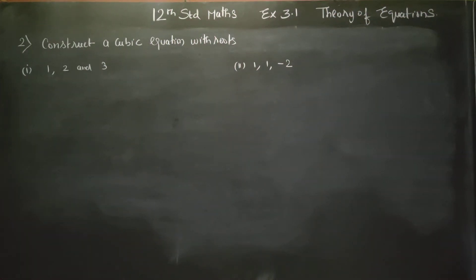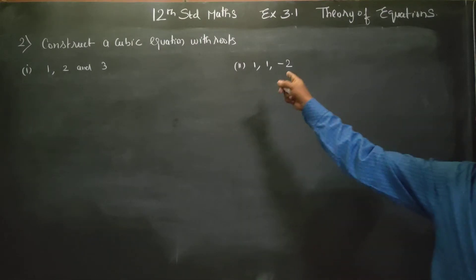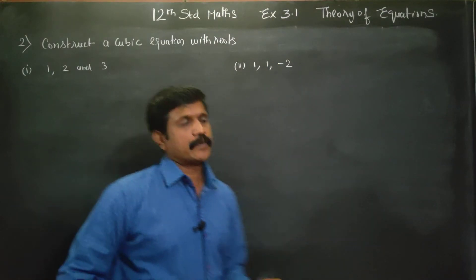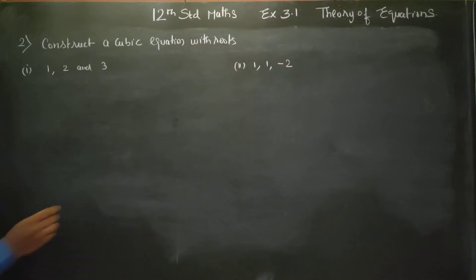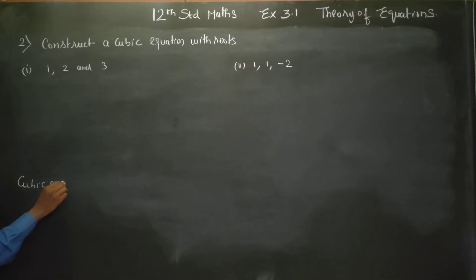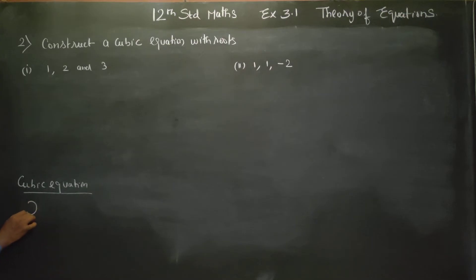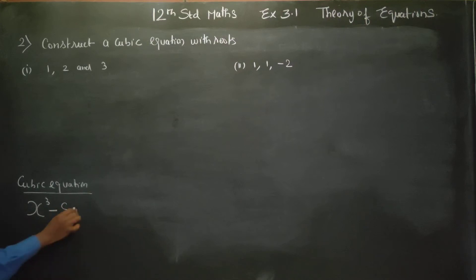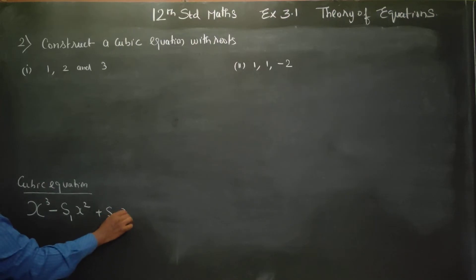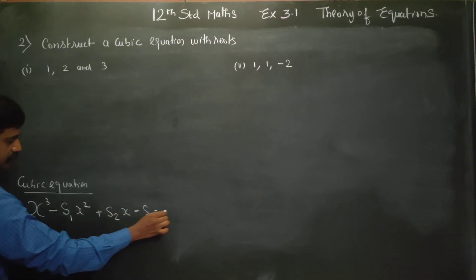Hello to all standard students. In exercise number 3.1, theory of equations, we are going to construct a cubic equation with the roots 1, 2, and 3 — each is one root. A cubic equation uses this formula: x cube minus s1 x square plus s2 x minus s3 is equal to 0.